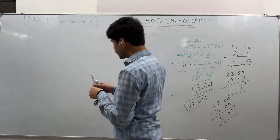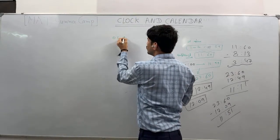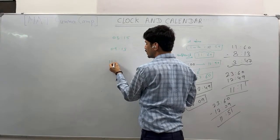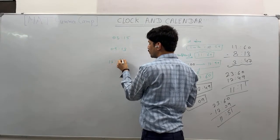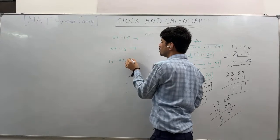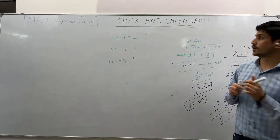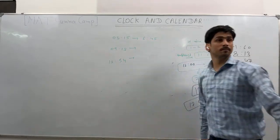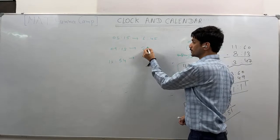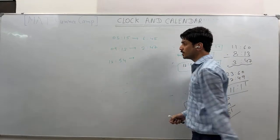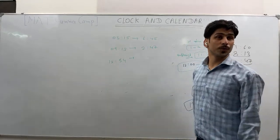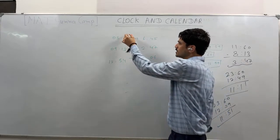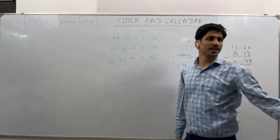Practice questions — find the mirror image of: 5:15 → 6:45; 9:13 → 2:47; 12:54 → 11:06. Note: the sum of the minutes must equal 60, and the sum of the hours must equal either 11 or 23 depending on the case.